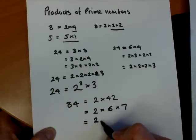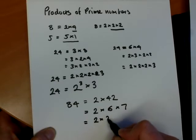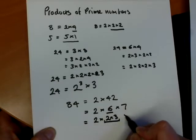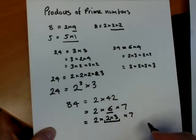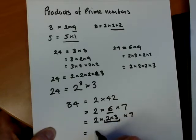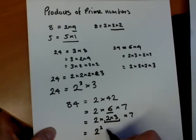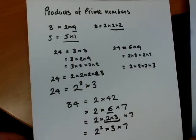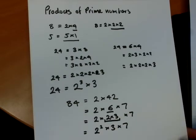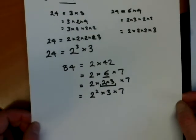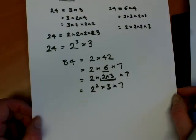And we can break that down to 2 times, and I'm changing the 6 now to 2 times 3. I'll underline that so you can see what's going on, and the 2 and 7 are already done. So we now have 84 is 2, and we can write 2 squared as it's 2 times 2 times 3 times 7. So 84 as a product of primes is 2 times 2, or 2 squared times 3 times 7.